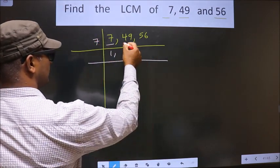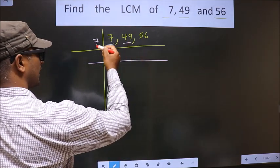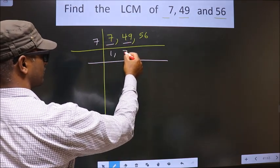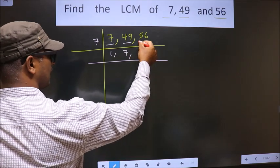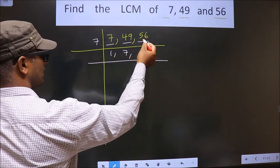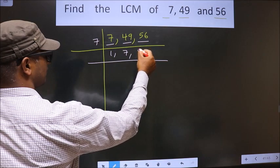Now the other number is 49. When do we get 49 in 7 table? 7, 7 is 49. The other number is 56. When do we get 56 in 7 table? 7, 8 is 56.